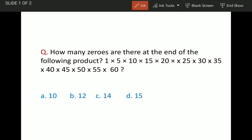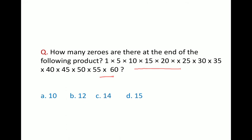The question is how many zeros are there at the end of the product of these numbers: 1 × 5 × 10 × 15 × 20 × 25 × 30 × 35 × 40 × 45 × 50 × 55 × 60. So we will see the solution.